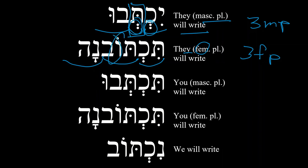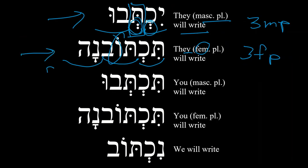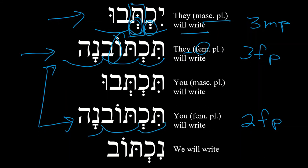Look again — here is our ḥolam vav. We did not see this in the feminine singular forms, but now it comes back to us in the feminine plural. Ironically, this was the one place we did not have the 'o' sound, but now we have it in the feminine plural. In fact, we'll have the same form down here with the 2FP — second person feminine plural — which is also tiktouna. Same word; context will tell you which one we're talking about. Now, if you wanted to say 'you,' masculine plural (2MP), will write, you would say tiktevu.